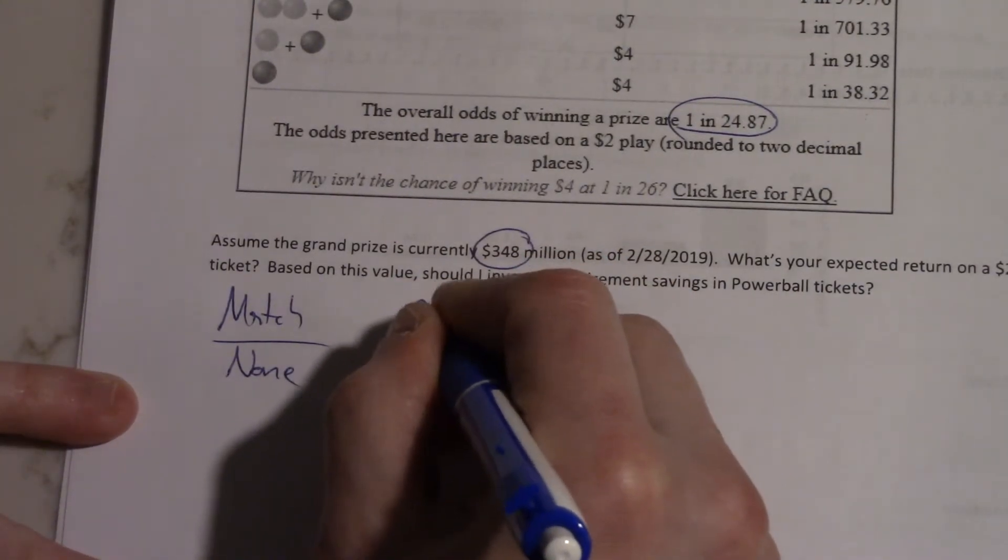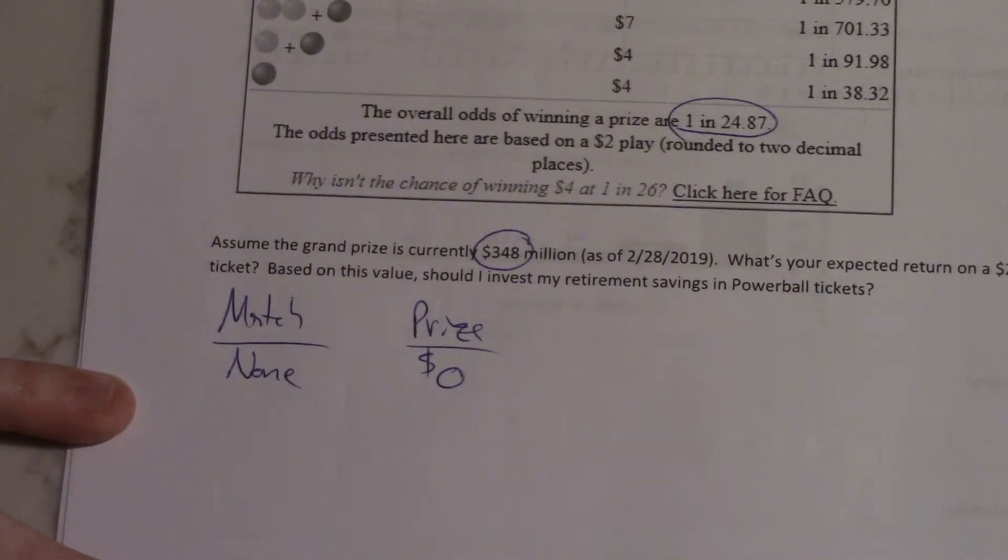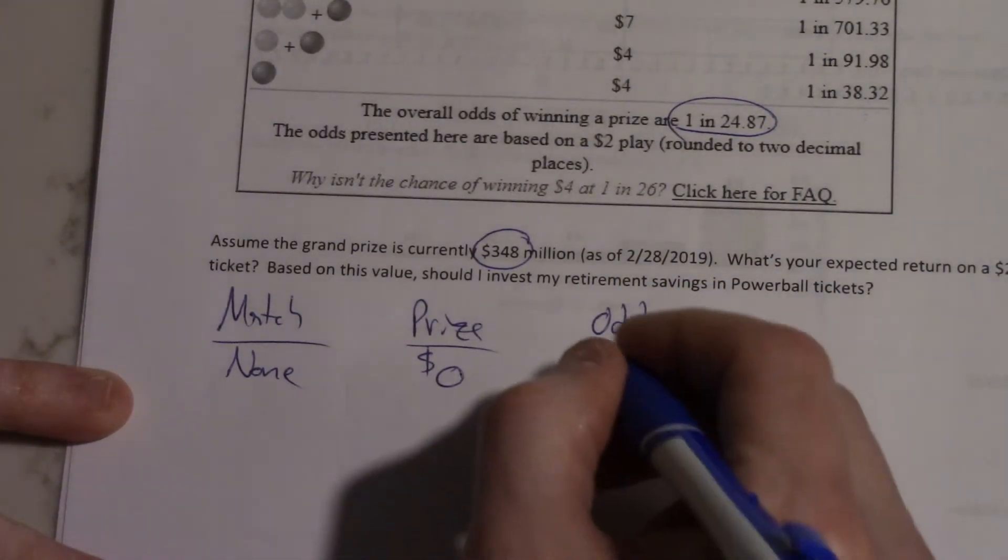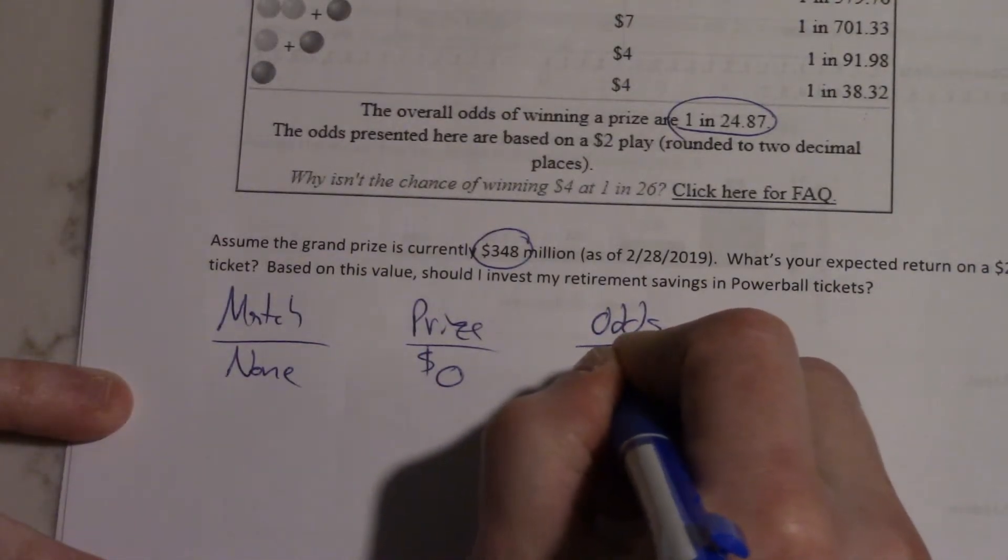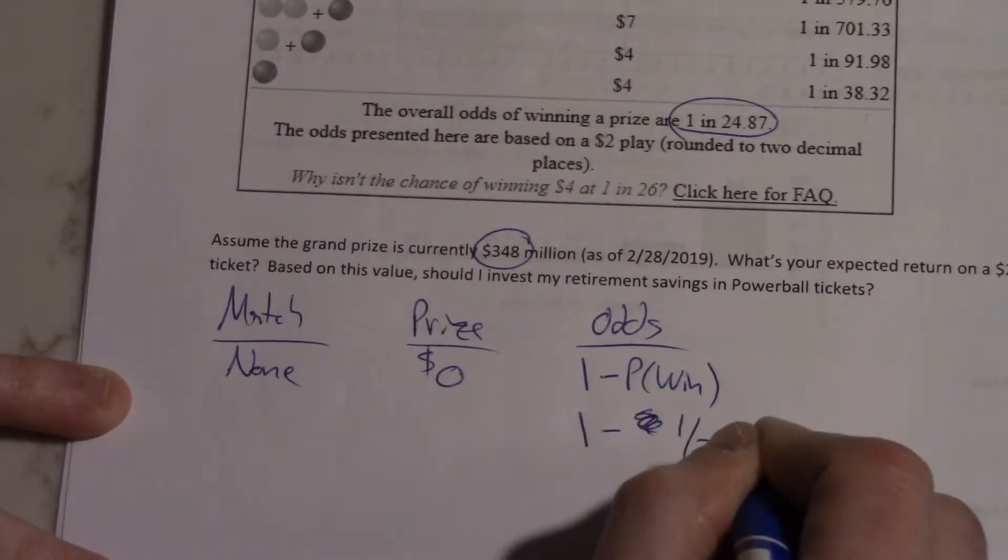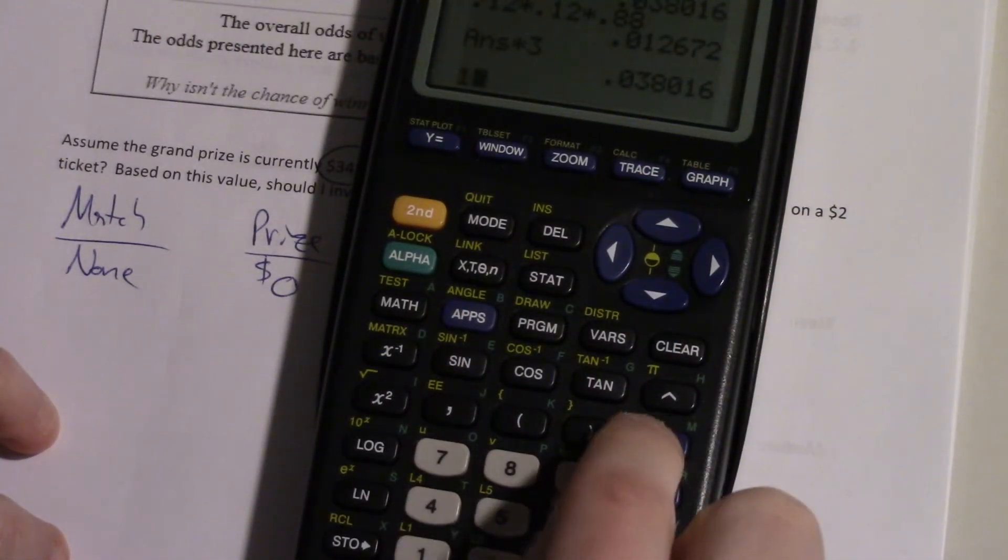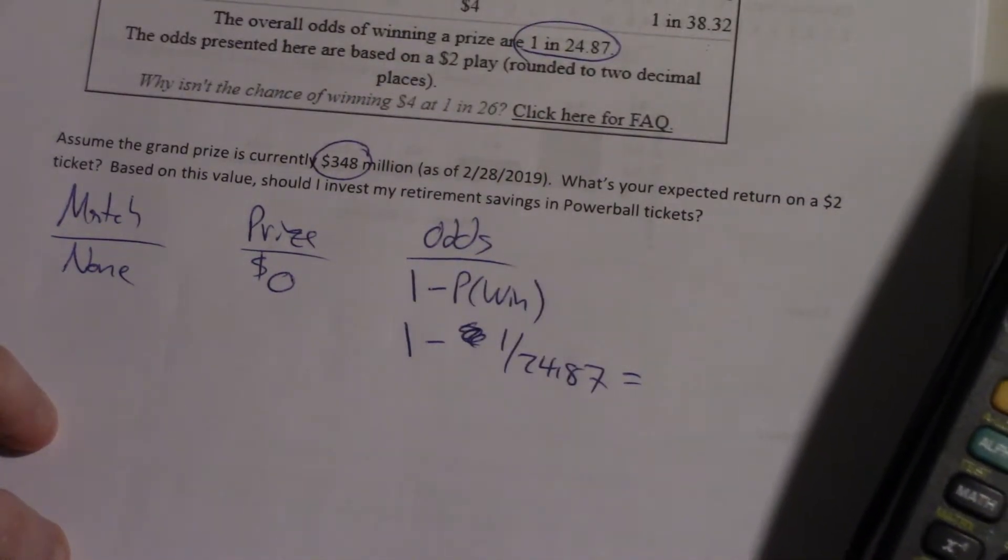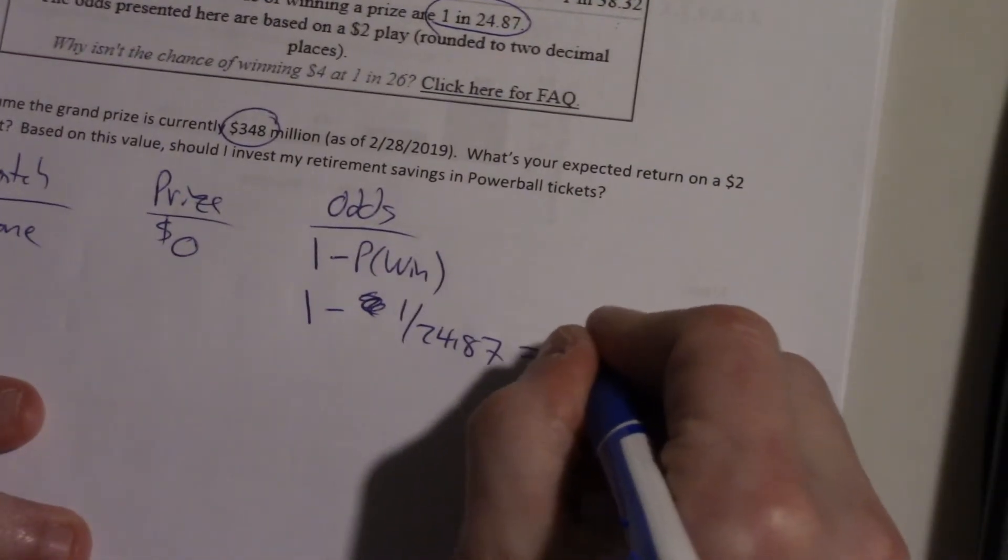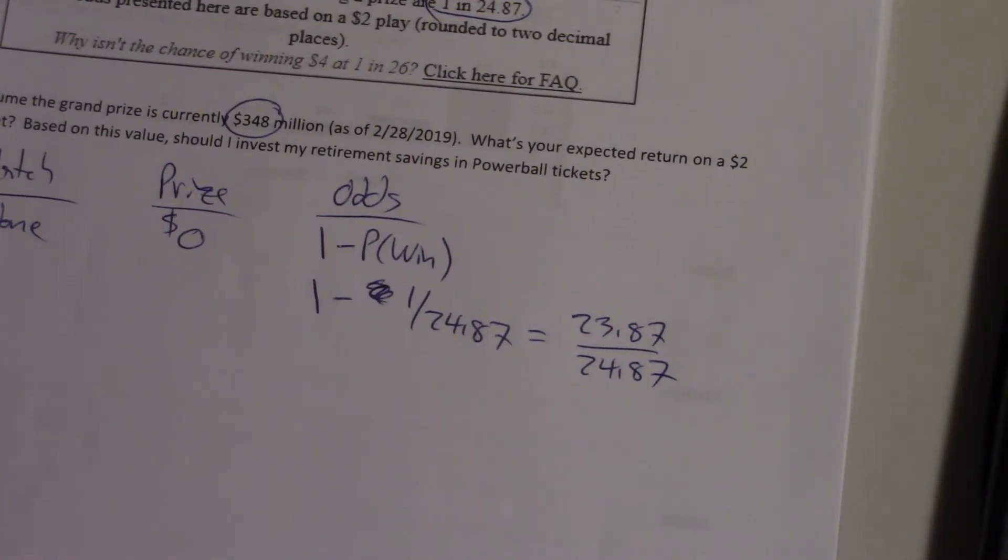What they're not telling you is that if you match nothing, your prize is zero dollars. So they're not telling you how often you'll lose. But what they do tell you is how often you'll win. So the odds of losing, we can do that via the complement rule. 1 minus the probability that you win something. So, 1 minus 1 out of 24.87 works out to be. I don't need to use a decimal actually. So it's going to be 24.87 minus 1, 23.87 out of 24.87. So that's the chance that you win nothing. You just lose your two bucks.